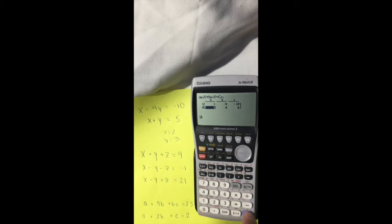On the lower, we have 1, 1, and 5. We hit enter twice, and we get X is equal to 2, and Y is equal to 3.